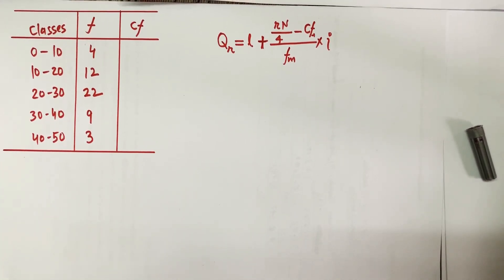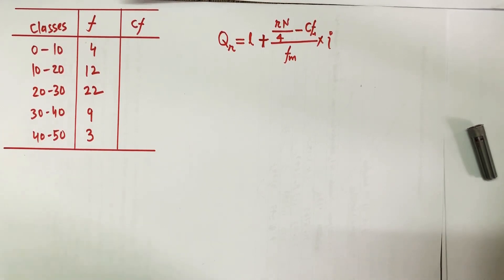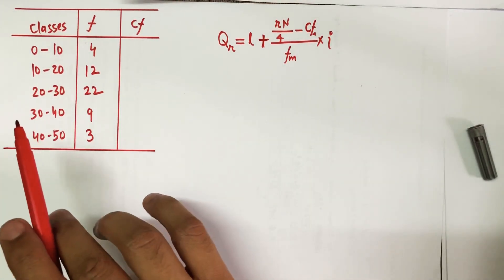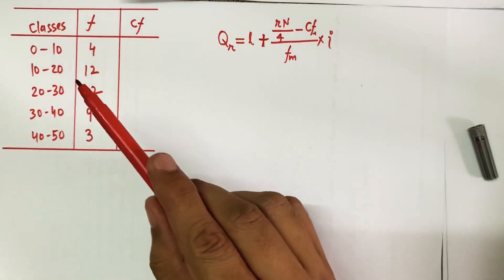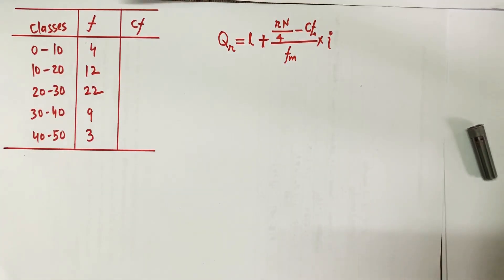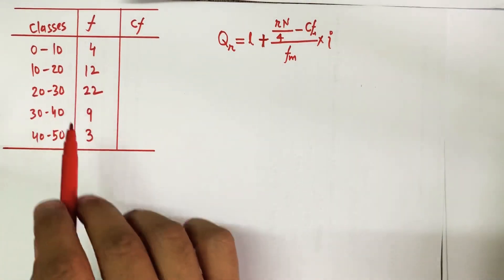Hello everyone. In this video I will be discussing the calculation of quartile in continuous distribution. I have a question right in front of me — classes of marks where students' scores are distributed between 0 to 50. The minimum marks are zero and the maximum a student can score is 50. The frequency shows four students scoring between 0 to 10, twelve students scoring between 10 to 20, and so on.